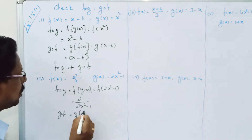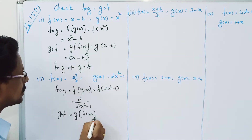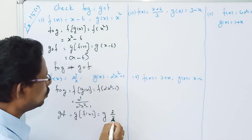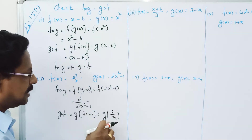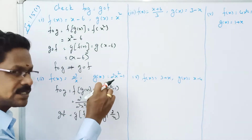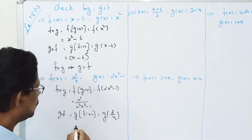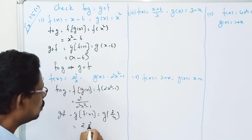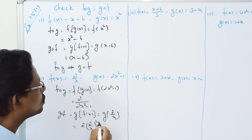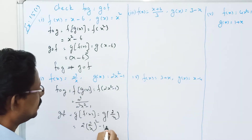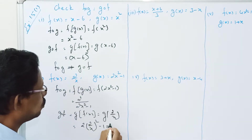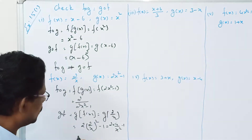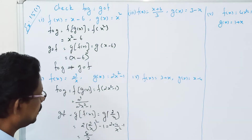Now G composition F — that is G of F of X — is equal to G of 2 divided by X. That is equal to 2 into 2 divided by X, the whole squared minus 1, which is equal to 2 into 4 divided by X squared minus 1.